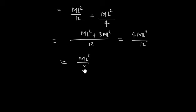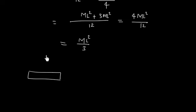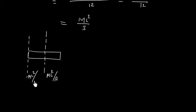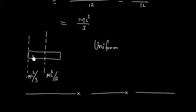These two results are important to remember: moment of inertia about an axis passing through the center of mass is ML²/12, and about an axis passing through the end is ML²/3. These results apply to a uniform rigid rod — uniform means the rod has the same cross-section everywhere, and rigid means the rod is not flexible and has a fixed shape.